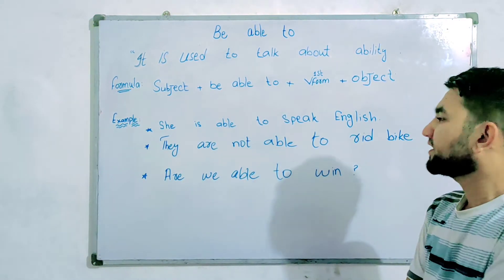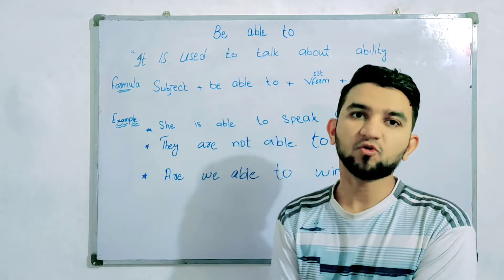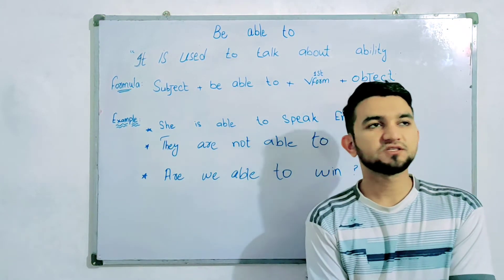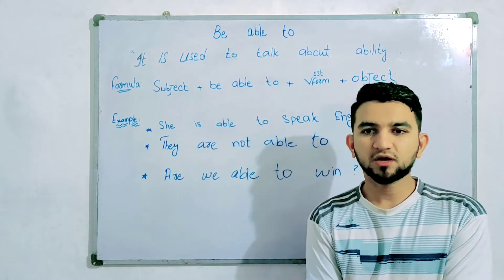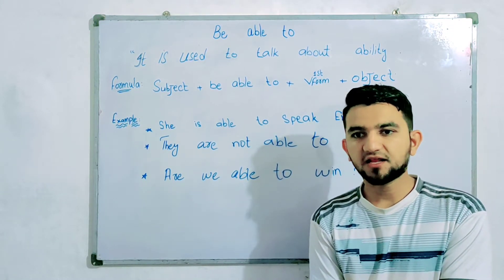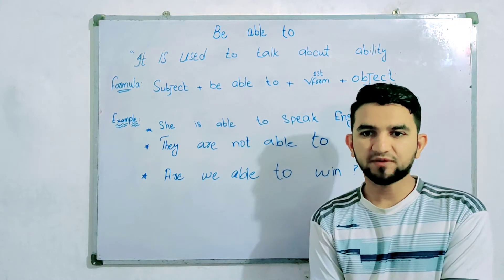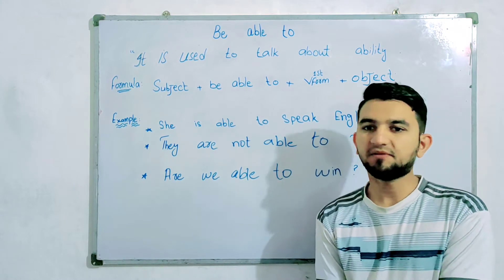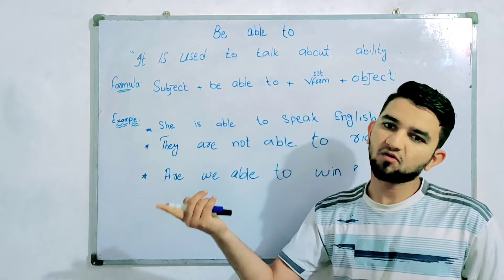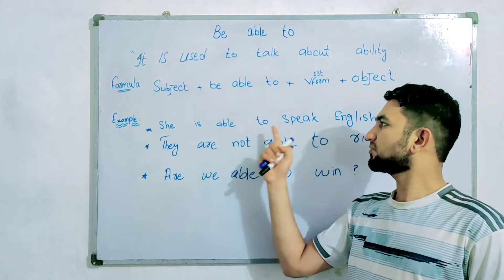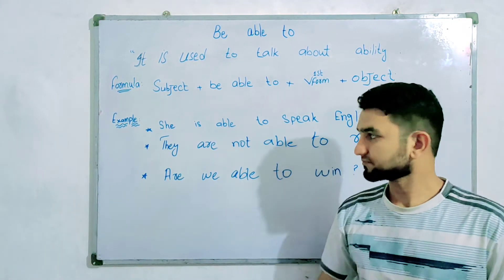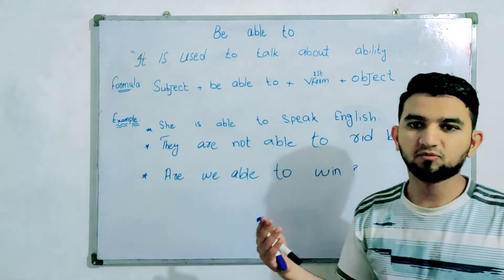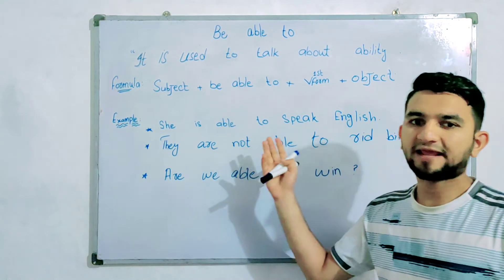We will now look at English examples using 'Able to'. She is able to speak English. They are not able to ride.